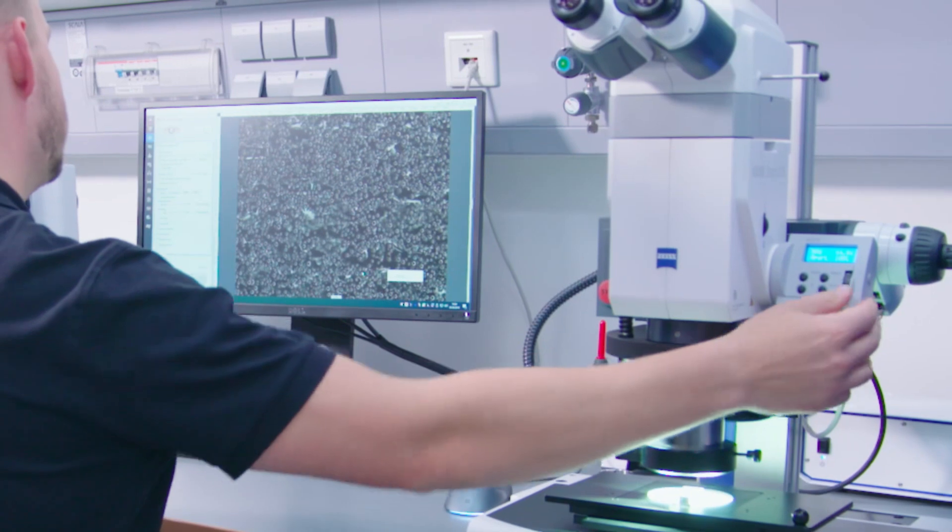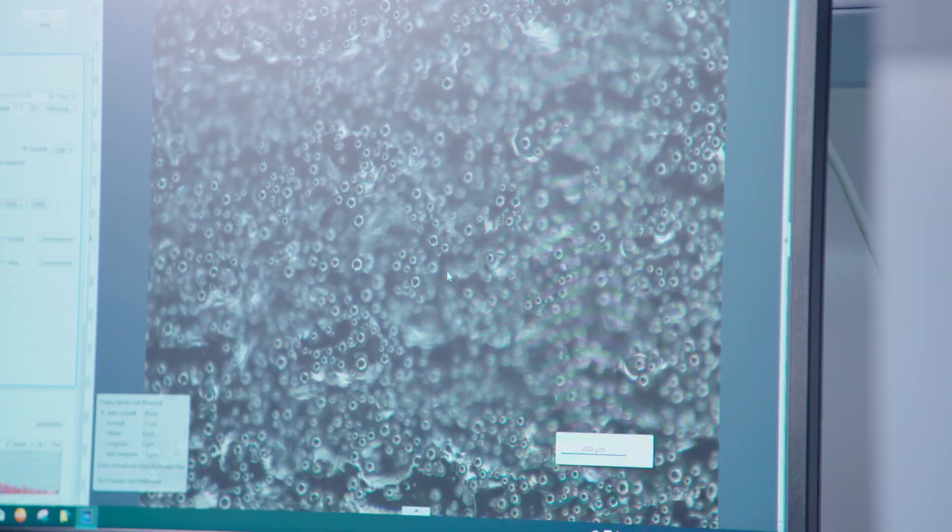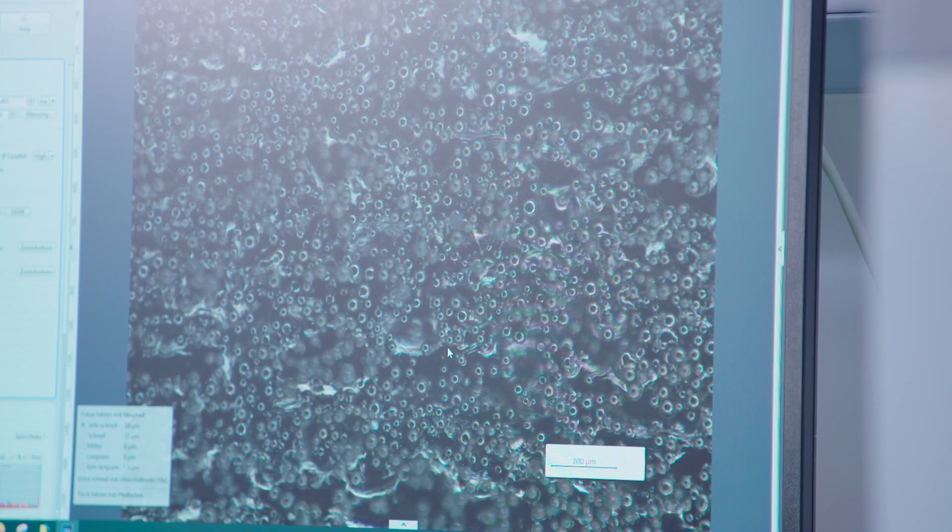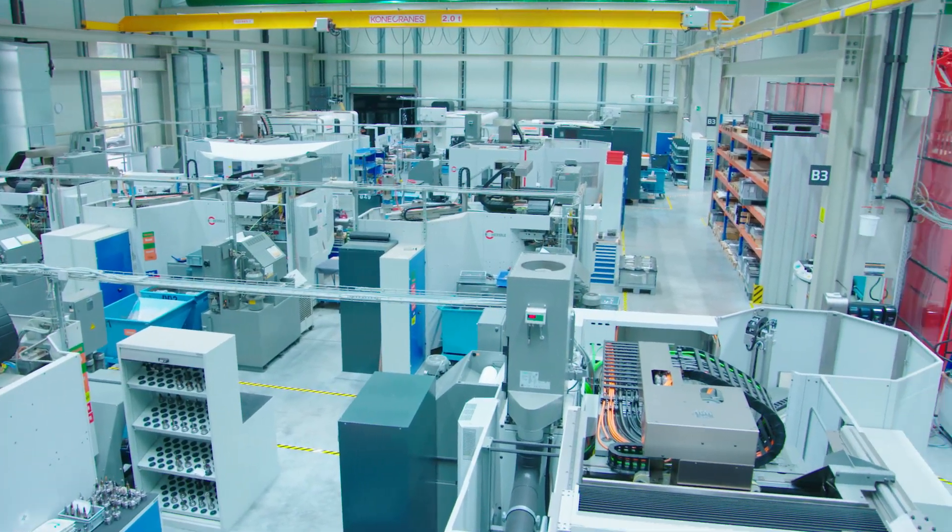Using the Zeiss Axio Zoom V16, porosity and crystallographic structure are being analyzed. Having passed this additional test, the raw part can be machined.